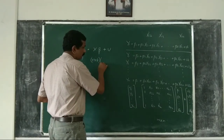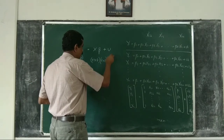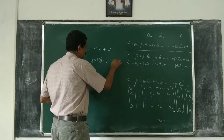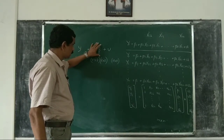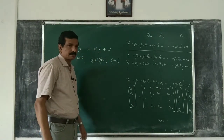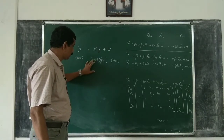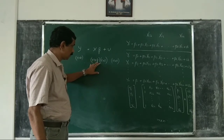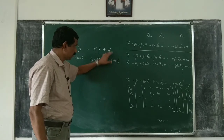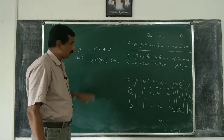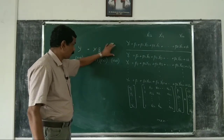Beta has the order k by 1, and U has the order n by 1. To summarize: X has order n by k (n rows, k columns), beta has k rows and 1 column, U has n rows and 1 column. And this is how we represent a k-variable model in matrix form.